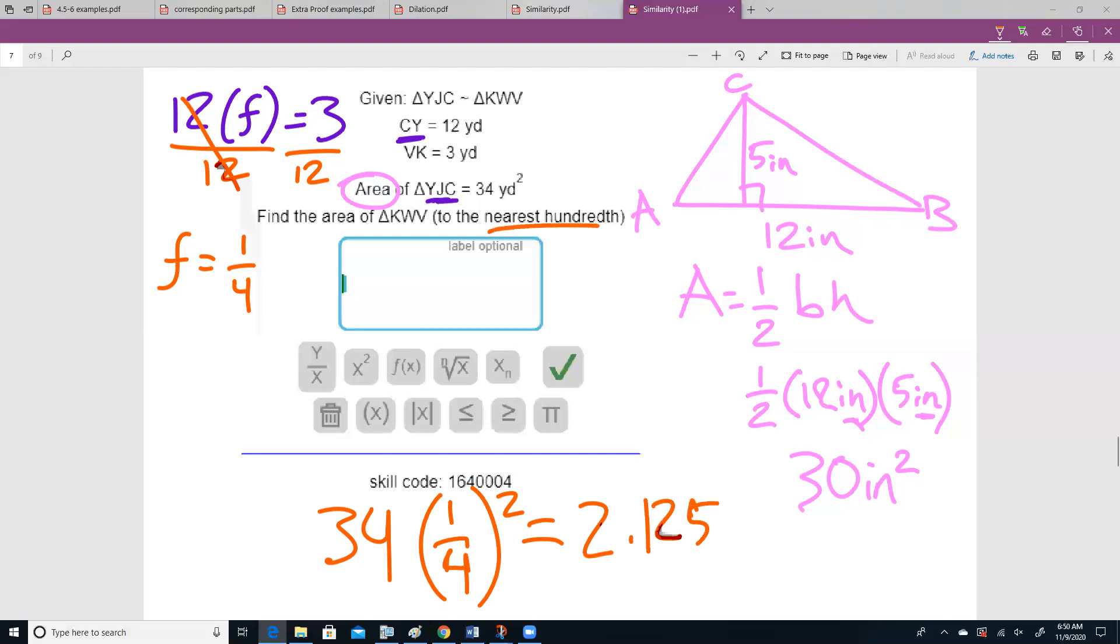We want to round it to the nearest hundredth, and our hundredth is two digits after the decimal place. If I look here, that means I'm going to take this 2, and will that 5 make the 2 round up or stay the same? Well, it'll make it round up. So we have 2.13. In this case, it'll be yards squared.